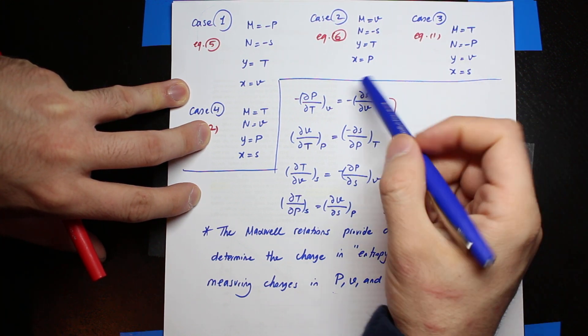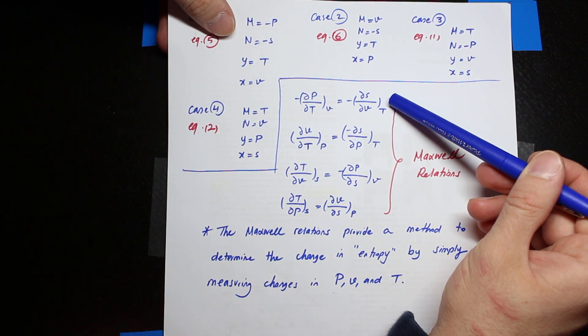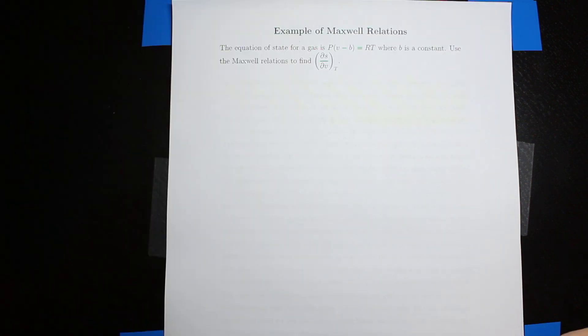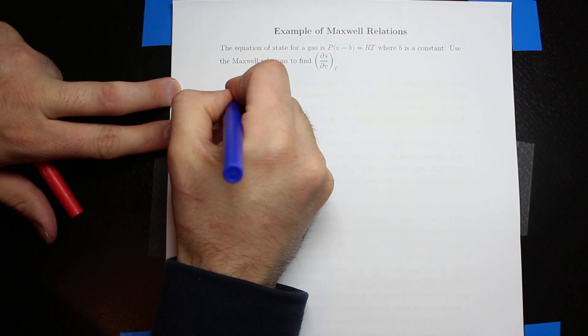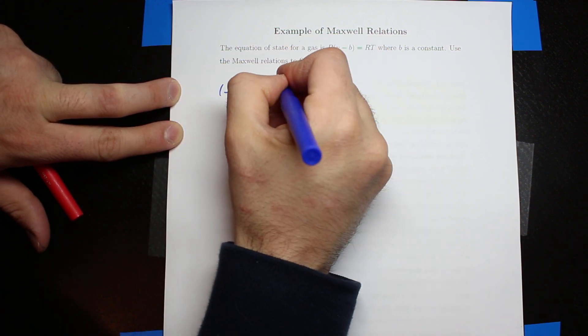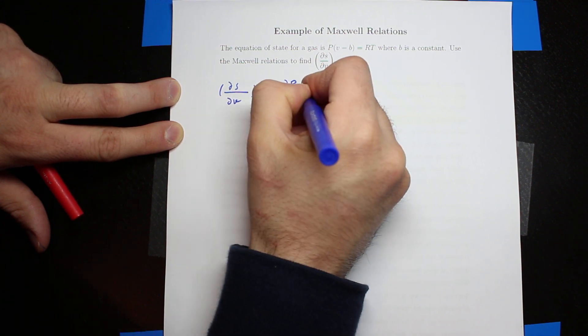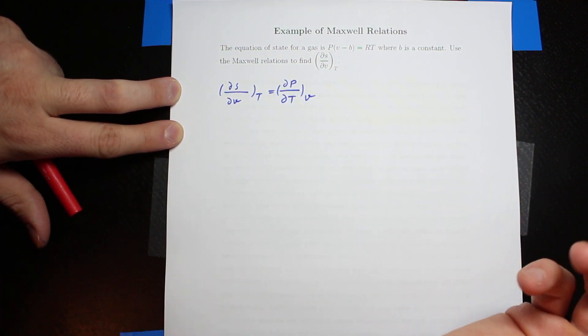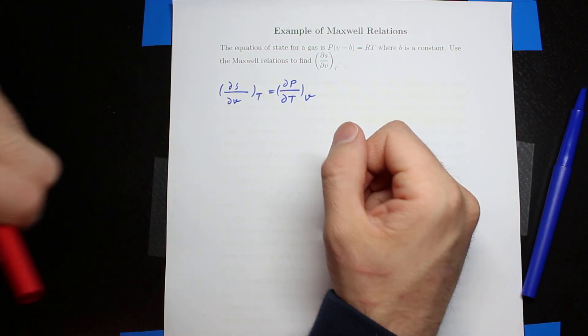We can cancel these two negative signs and I will write down the first equation. The first equation says ∂S/∂V when the temperature is constant equals ∂P/∂T when the volume is constant. The left-hand side is a question mark in this question, so basically this is the unknown and we need to find that.